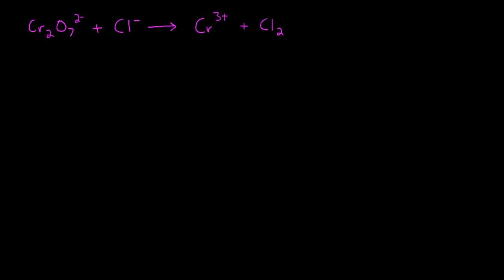It's very similar to the basic setup. The only difference is we're adding H+ on the left and water on the right. So let's go ahead and write our variables and our new equation with H+ and water included. So we've got A Cr2O7 2- plus B Cl- plus C H+ reacts to form D Cr3+ plus E Cl2 plus F H2O.